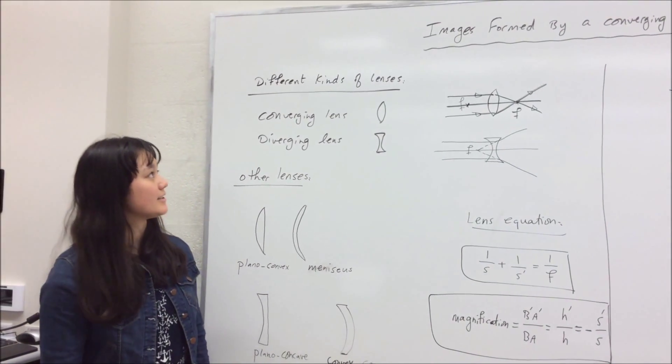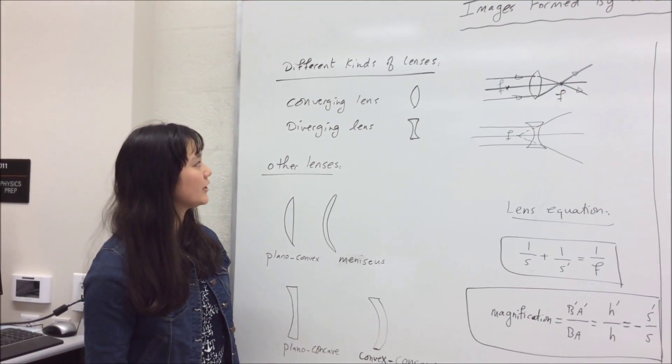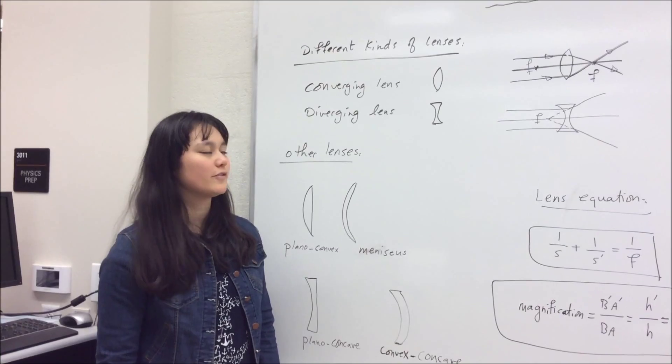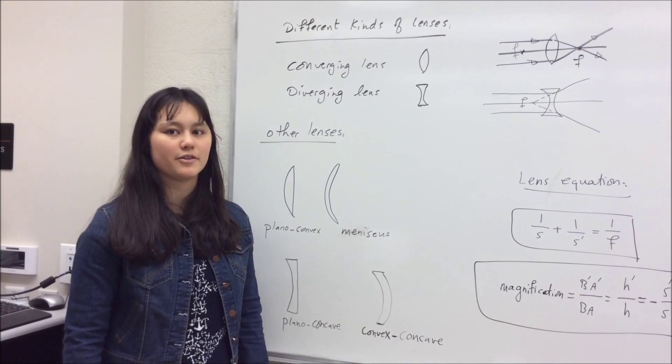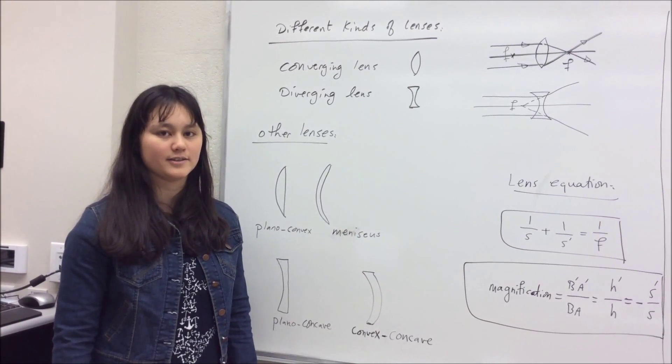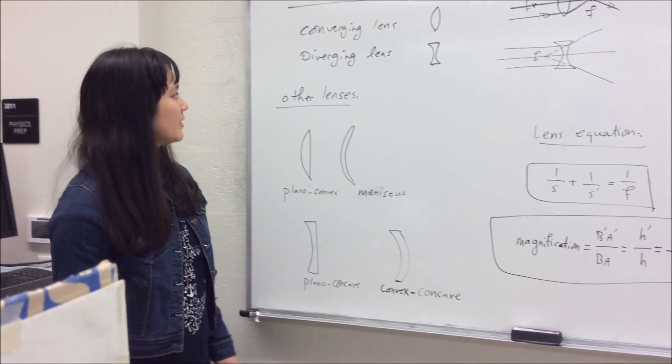Now we have many different types of lenses, but the two main types are converging and diverging lenses. Converging lenses are thicker in the middle and thinner on the outside, while diverging lenses are thinner in the middle and thicker on the outside.